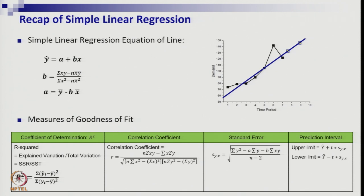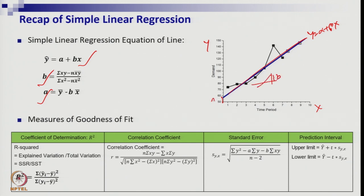In simple regression, if you have a dataset with an x variable and a y variable — a dependent variable and an independent variable — based on the sample data you can fit the regression like y equals to a plus bx. You can calculate the regression coefficient and the intercept through the least square method, as discussed in the previous session, and then fit the line. R-square is the coefficient of determination, which is the square of the correlation coefficient, or technically the explained variation divided by the total variation.